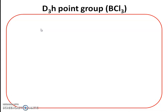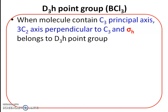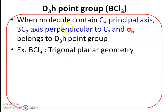Now we discuss in detail the D3H point group, for which boron trichloride is the example. Boron trichloride is a trigonal planar molecule because boron undergoes sp2 hybridization. There are three chlorine atoms attached to boron, and in D3H there must be a C3 principal axis, 3 C2 secondary axes perpendicular to C3, and a horizontal plane. Since n is odd, there is also an improper rotational axis of symmetry.